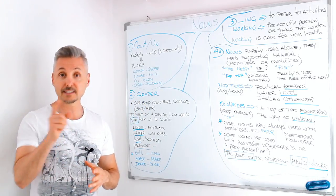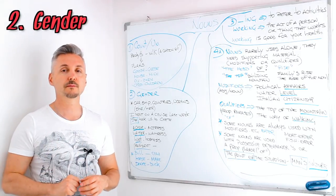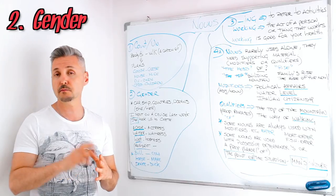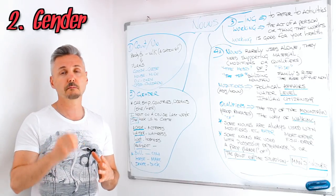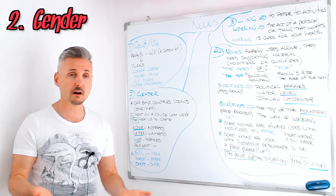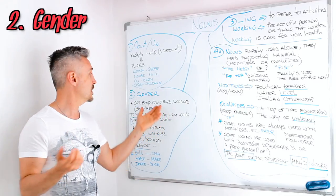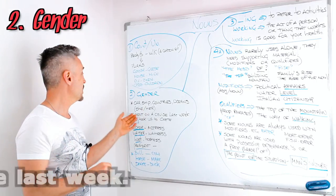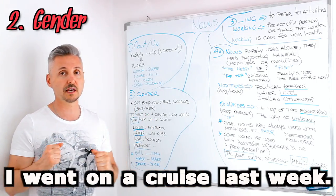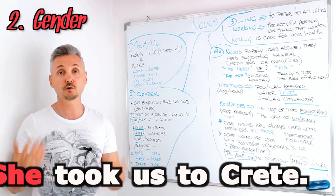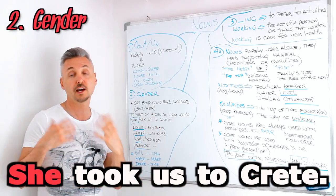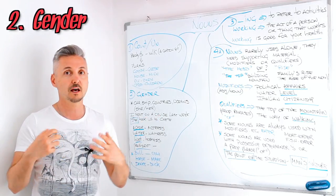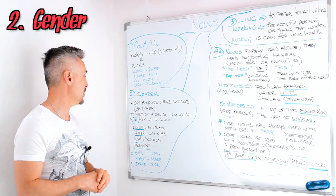The second point is gender. With some means of transport, you use the pronoun 'she' or the possessive pronoun 'her' — for example, with cars, ships, countries, and oceans. For example: 'I went on a cruise last week. She took us to Crete.' So 'she' here refers to the cruise — it is usually referred to with a feminine pronoun or possessive pronoun.